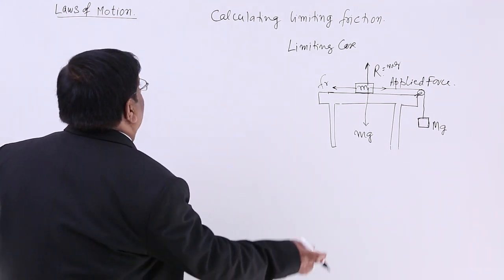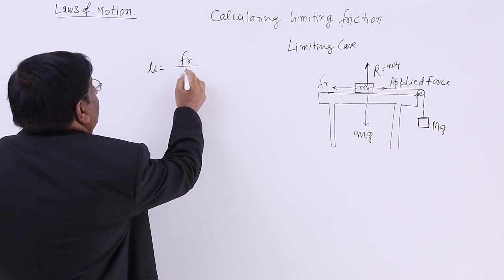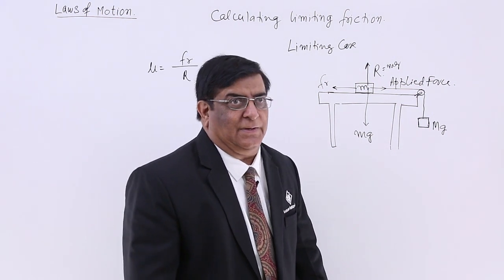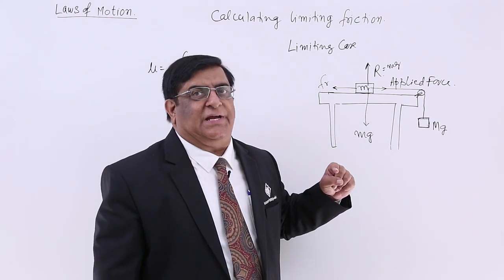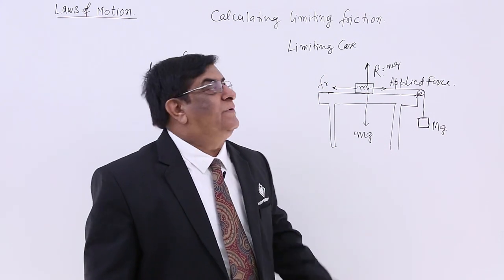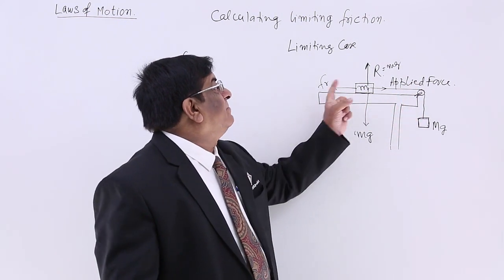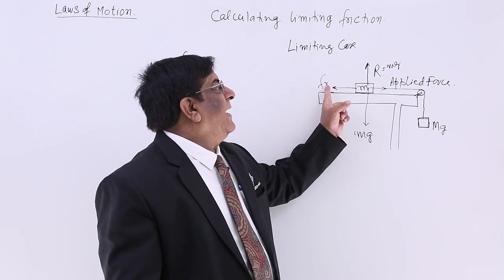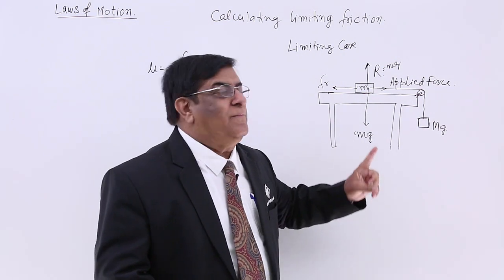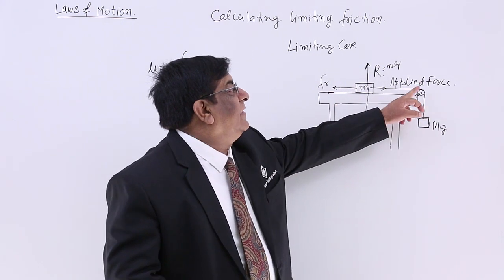We have seen that μ is equal to friction divided by normal reaction R. Now, how much is the force of friction? The purpose of making this diagram is to understand that the force of friction here cannot be measured directly. So how do we measure it? We can measure it by equating it with the applied force. Who is balancing the force of friction? The applied force is balancing it. And at what stage? The limiting case. So at that time, the value of friction is the limiting friction, and it is equal to the applied force.